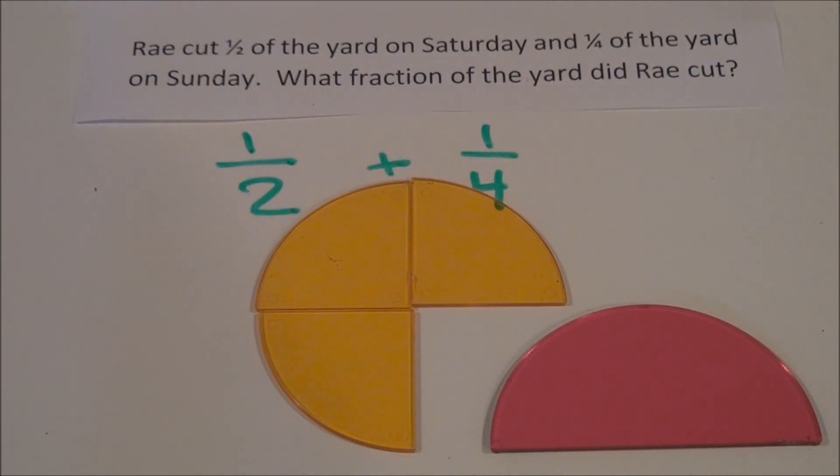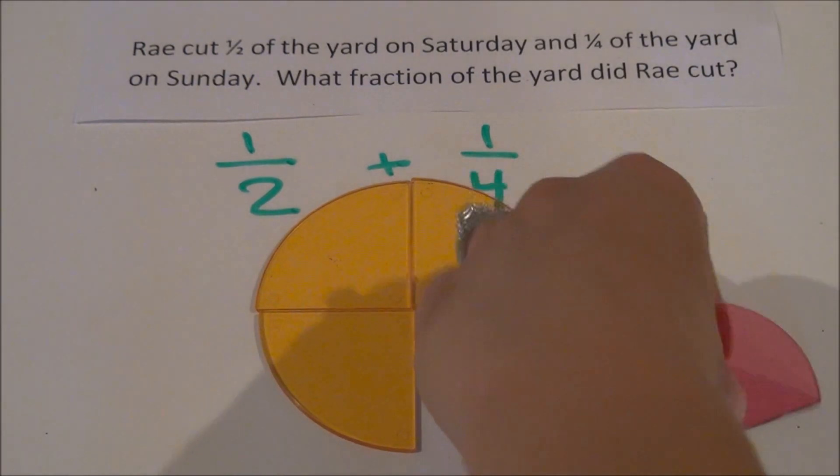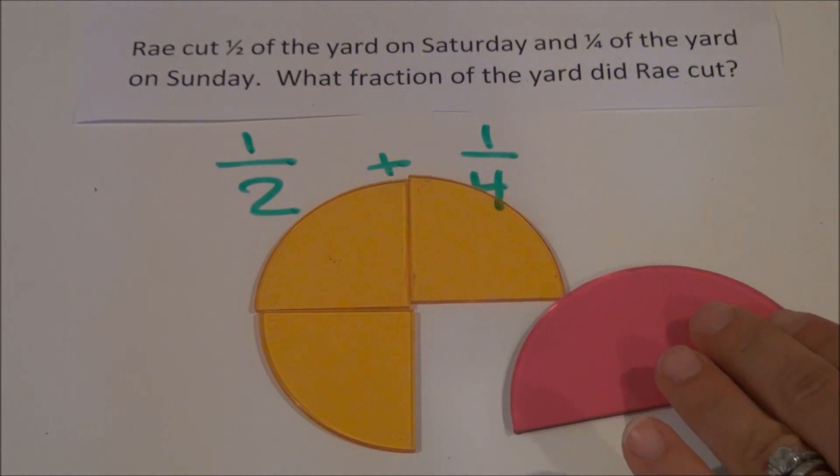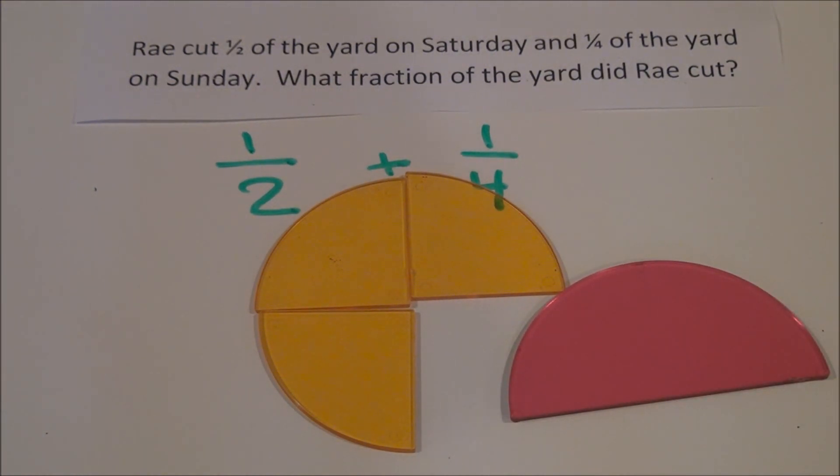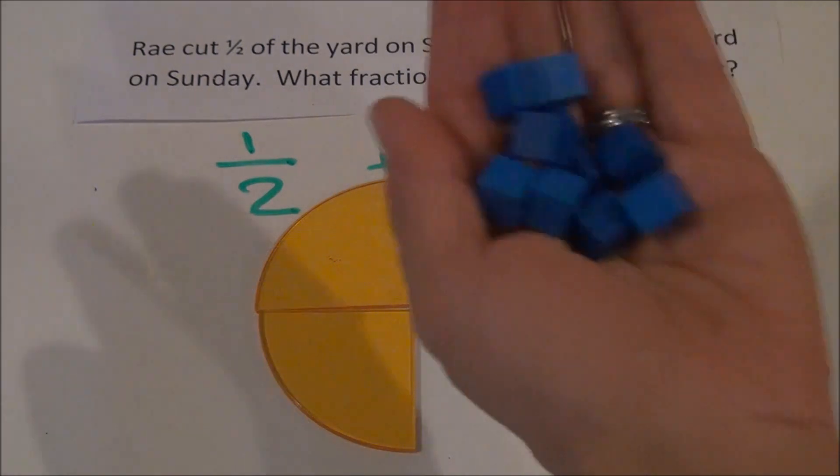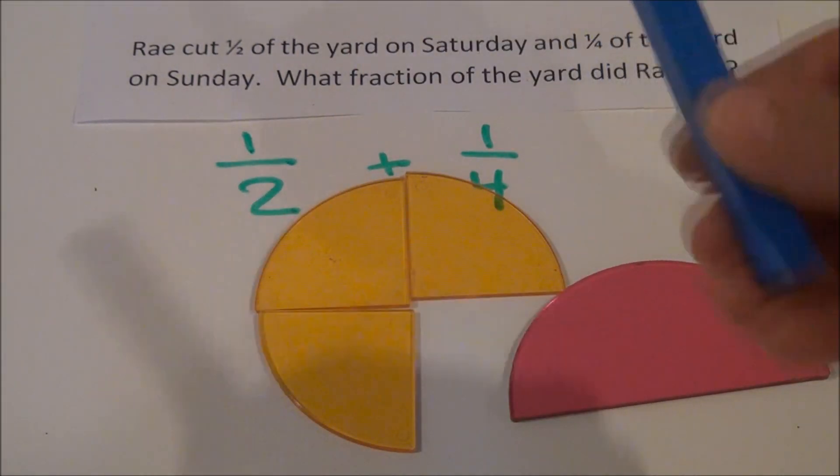Notice the focus on manipulatives in this example. Using manipulatives such as fraction bars as well as circle models is essential to the conceptual development of the standard. The physical trading of the two one-fourths pieces for that one-half helps students gain a deeper understanding of equivalent fractions. You may even connect this idea of equivalency to the exchange of two nickels for a dime, or ten unicubes for one tenrod.